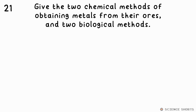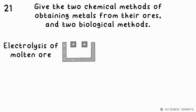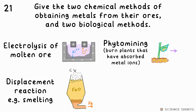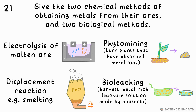Question 21. Give two traditional methods of obtaining pure metals from their ores and the two new developing methods involving organisms. Pure metals can be obtained by electrolysis or displacement reactions. Phytomining involves planting plants in metal-rich soil so the ions are absorbed into the roots; you then burn the plants and get the pure metal from the ash. The other method is bio-leaching, where bacteria produce a leachate solution containing copper, which can then be harvested. Neither method produces the pure metal in any meaningful quantities.